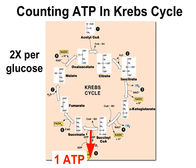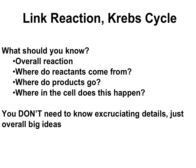The last theme to keep track of is ATP. The Krebs cycle generates one ATP per turn, and since there are two turns of the Krebs cycle per glucose, this makes two ATPs per glucose.